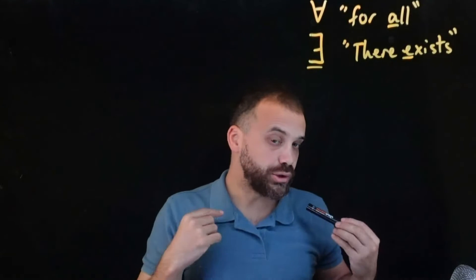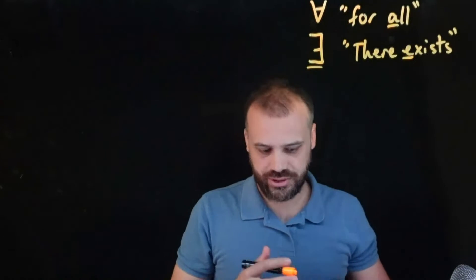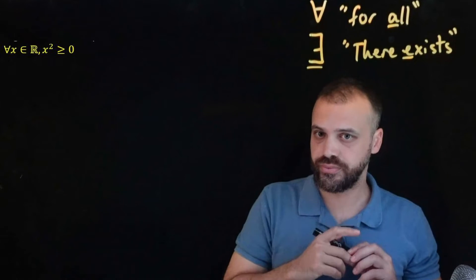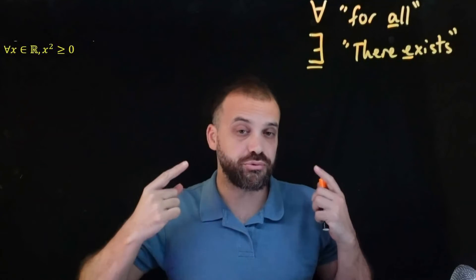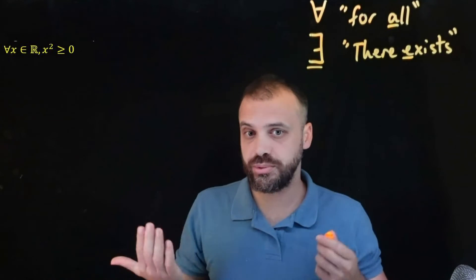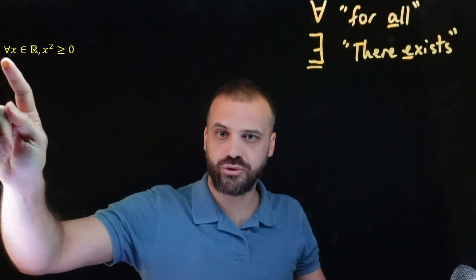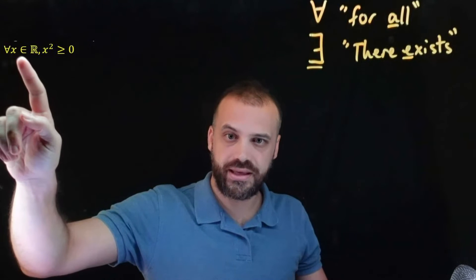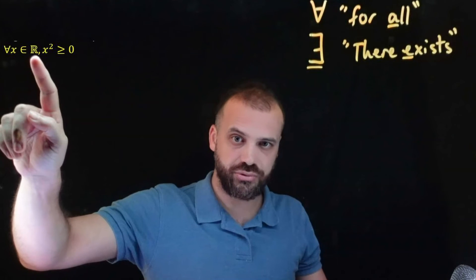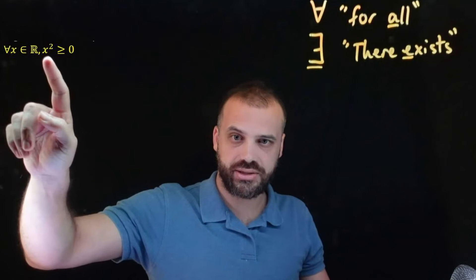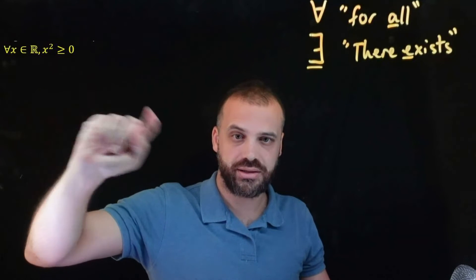Let's look at a mathematical sentence. Now we have to read this the same way that we would read any other sentence. What does that mean? For all x in the set of real numbers, x squared is greater than zero.